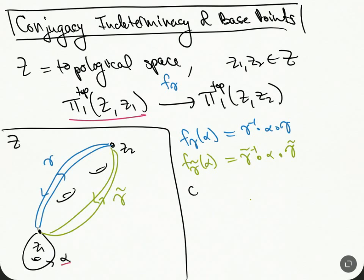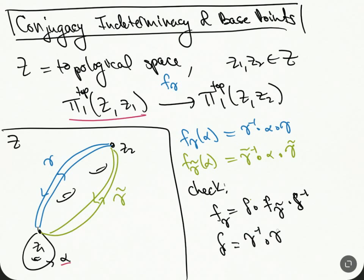One can check how these two maps are related — that F(Gamma) and F(Gamma-tilde) are related by conjugation. Specifically, F(Gamma-tilde) = Delta inverse composed with F(Gamma) composed with Delta, where Delta = Gamma inverse composed with Gamma-tilde. You can just see that these guys cancel, and you're left with the Gamma inverse expression.